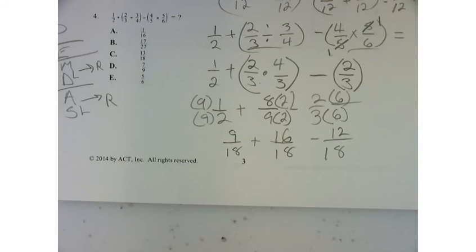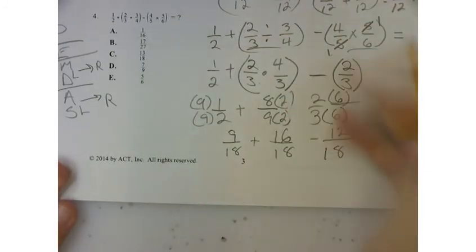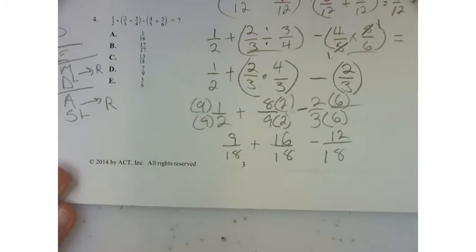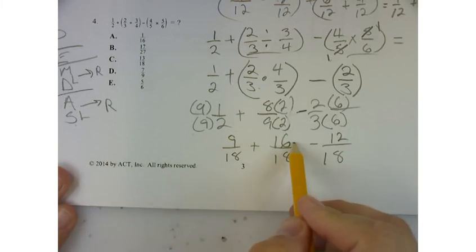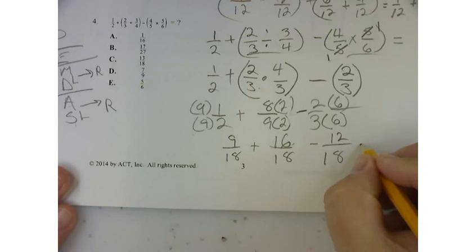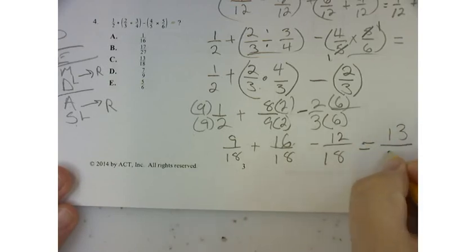Sorry, I'm going kind of fast. But this should be a review, right? You've graduated from high school, or you're in high school. Okay, so we add it all up. Remember, when we're adding or subtracting, we just go left to right. So 9 plus 16 is 25, minus 12 is 13. So my final answer is 13 over 18.